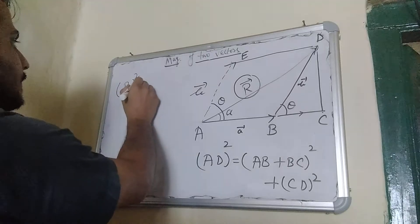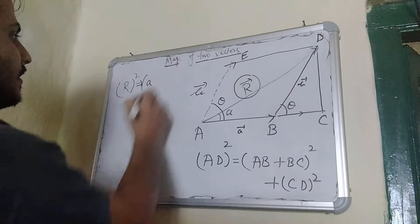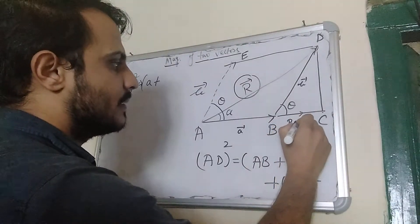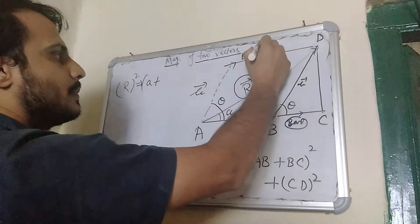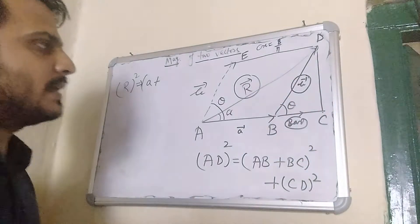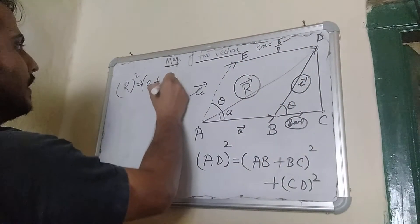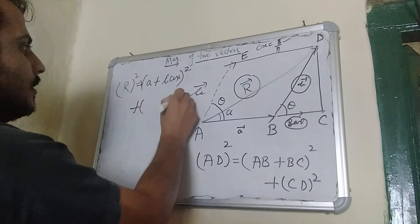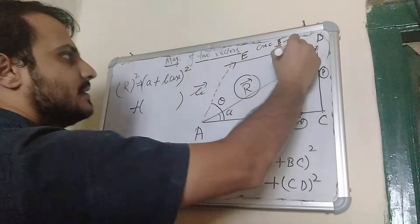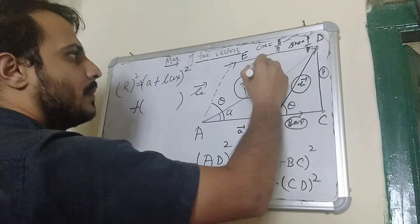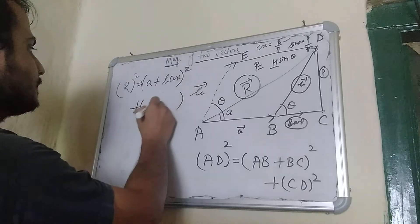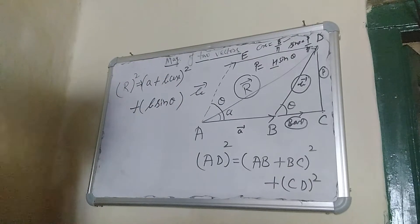After that, AB is the a vector, so I write a. Now for BC — in this triangle, BC is the base. We know that cos θ = base/hypotenuse, so base = h·cos θ. The hypotenuse here is b, so the base BC = b·cos θ. And for CD, which is the perpendicular: sin θ = perpendicular/hypotenuse, so perpendicular = h·sin θ. Again h is b, so CD = b·sin θ. Now I have this expression and we will solve it to get the answer.